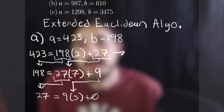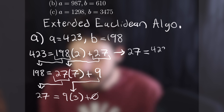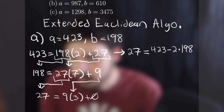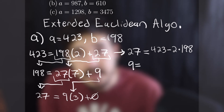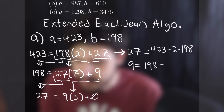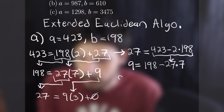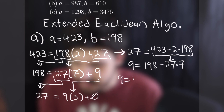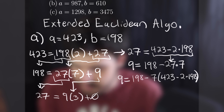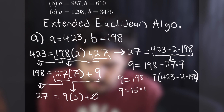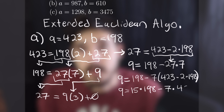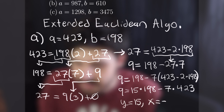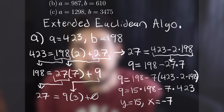From here we go backwards, expressing each remainder in terms of our original two numbers. We start with 27, which equals 423 minus 2 times 198. Then 9 equals 198 minus 27 times 7. We substitute our expression for 27 into that: 9 equals 198 minus 7 times (423 minus 2 times 198). Grouping the 198s and 423s gives 9 equals 15 times 198 minus 7 times 423. So y equals 15 and x equals negative 7, giving us the linear combination we were looking for.